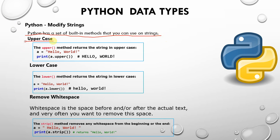The uppercase method returns the string in uppercase. For example, if a is equal to 'Hello World', using a.upper() will convert the whole string into uppercase capital letters. Then after that, we will look at lowercase.